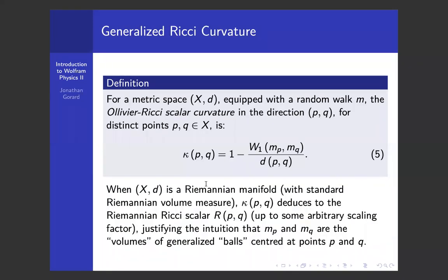Given this notion of average distance in terms of the Wasserstein distance, we can immediately port over the standard definition of the Ricci scalar to use the Wasserstein distance instead. We define it as the discrepancy between the metric distance between points P and Q and the Wasserstein distance between them, up to second order. That gives us what's called the Ollivier Ricci scalar curvature in the direction PQ — named after Yann Ollivier, building on work by Robin Forman, Jürgen Jost, and others in the tradition of defining curvature on arbitrary metric spaces. In the special case where X is a Riemannian manifold and D is a Riemannian metric, the Ollivier Ricci scalar curvature becomes exactly the Riemannian Ricci scalar curvature up to a multiplicative constant.